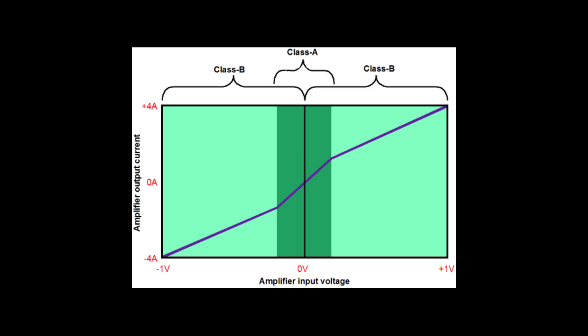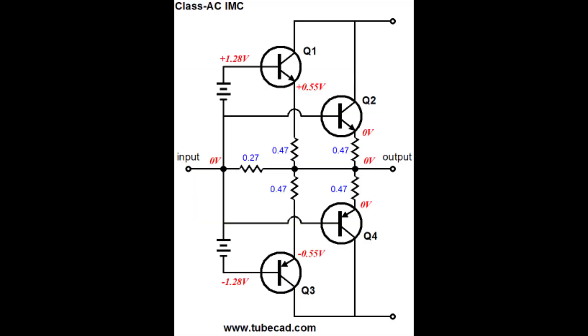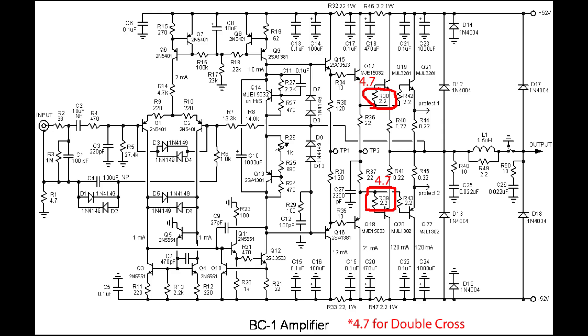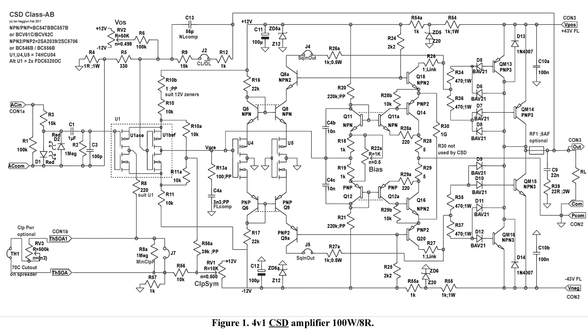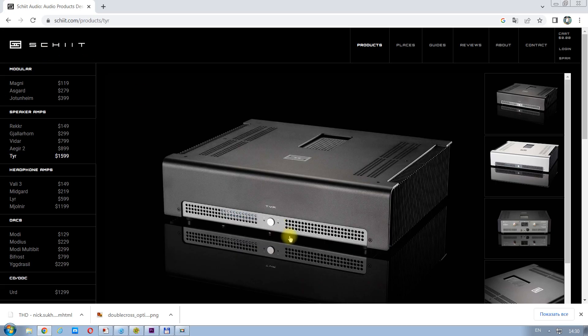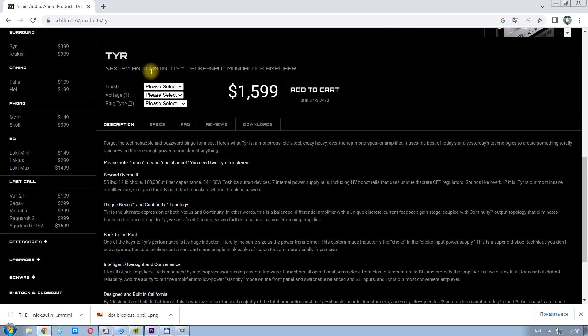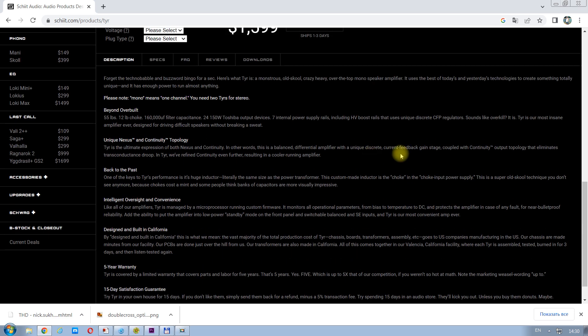Как я подробно показал во второй серии, первые попытки преодоления GM-даблинга теоретически вроде как понятные, а на практике оказались безуспешными. Класс AC Джона Броски, класс XD Дугласа Селфа, класс Double Cross Боба Кордала с Яном Хеглоном, M2 от Ямахи и несколько моделей усилков концепции Continuity калифорнийской фирмы Sheet Audio — все они остались с реальным клиром выше 0,001%.